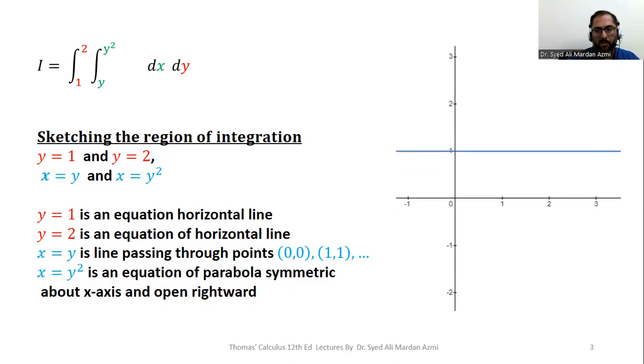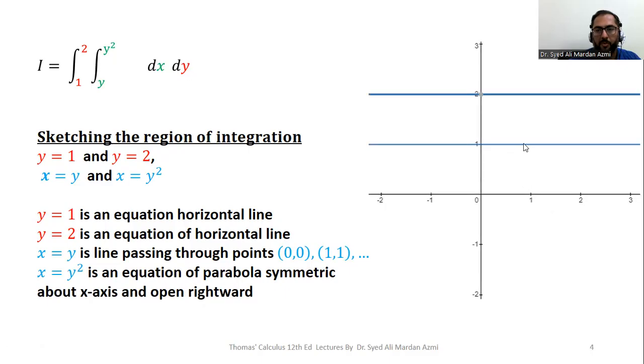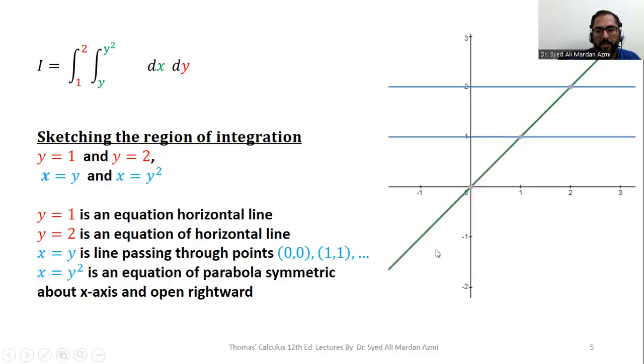In the next step, we will start our plotting. First of all, we have plotted y equal to 1, this horizontal line. In the next step, we have plotted y equal to 2, the second horizontal line. In the third step, we have plotted x equal to y.